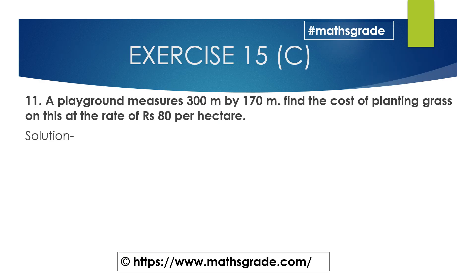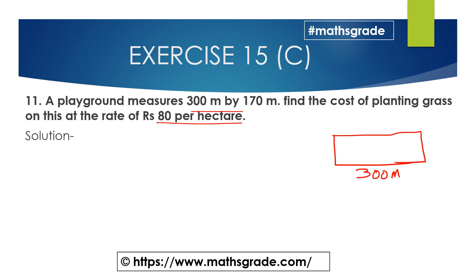Now we will solve question number 11. A playground measures 300 meters by 170 meters and the cost of planting grass on this is at the rate of 80 rupees per hectare. This is a rectangular playground — the length is 300 meters and the breadth is 170 meters. Opposite sides of a rectangle are equal, so we first have to find out the area.